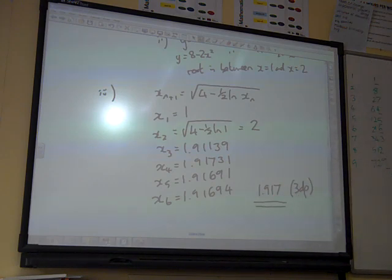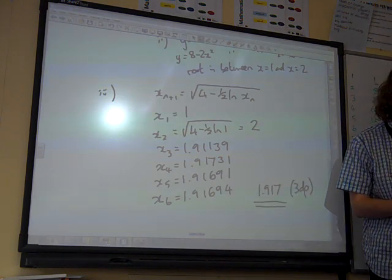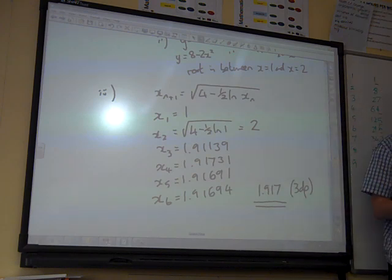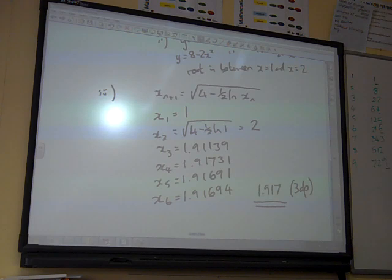So we have 1.917 to 3 decimal places. That would be our answer. The question then said the curves are each translated by 2 units in the positive x direction and then stretched by scale factor 4 in the y direction. Find the coordinates at the point where the new curves intersect.